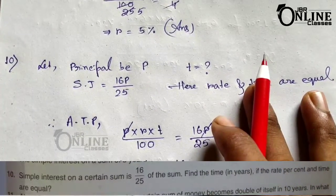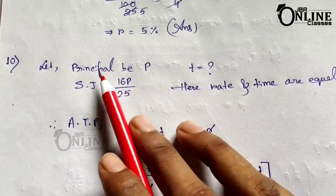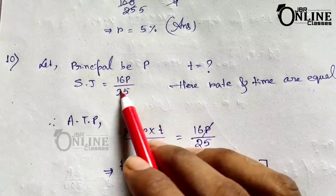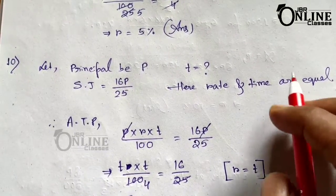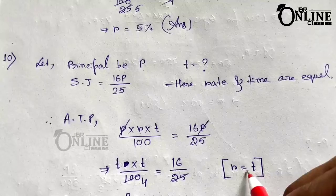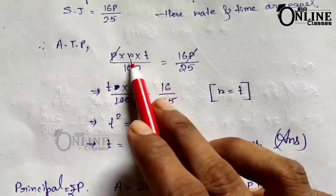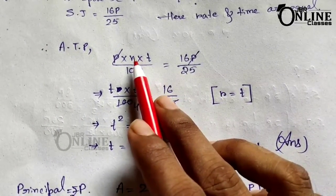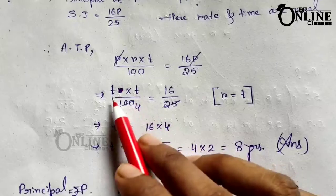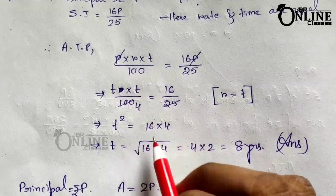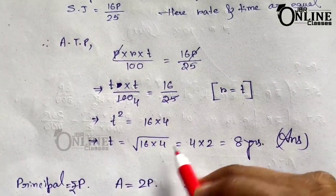Sum number 10: Simple interest on a certain sum is 16/25 of the sum, and the rate and time are equal. Let principal equal P, so SI equals 16P/25. Since R equals T, using PRT by 100 equals 16P/25: P cancels, giving T into T by 100 equals 16/25. So T squared equals 16 into 4, and T equals the square root of 64, which equals 8 years.